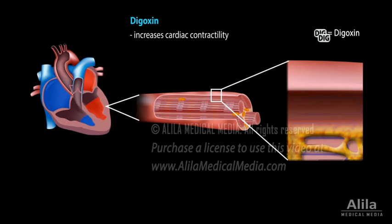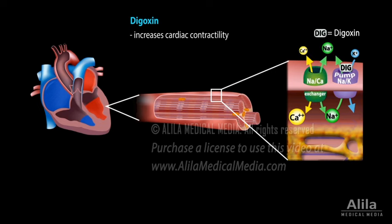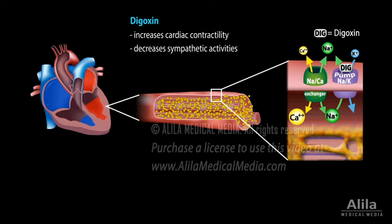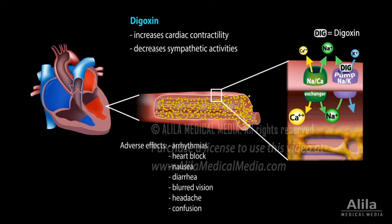Digoxin increases cardiac contractility by inhibiting the sodium-potassium pump, causing intracellular sodium concentration to rise. This then leads to higher levels of intracellular calcium via the action of sodium-calcium exchanger. Higher calcium results in increased muscle contraction. Digoxin also decreases sympathetic activities, slowing down heart rate. However, due to its many adverse effects, it is normally used only for patients who do not improve with other medications.